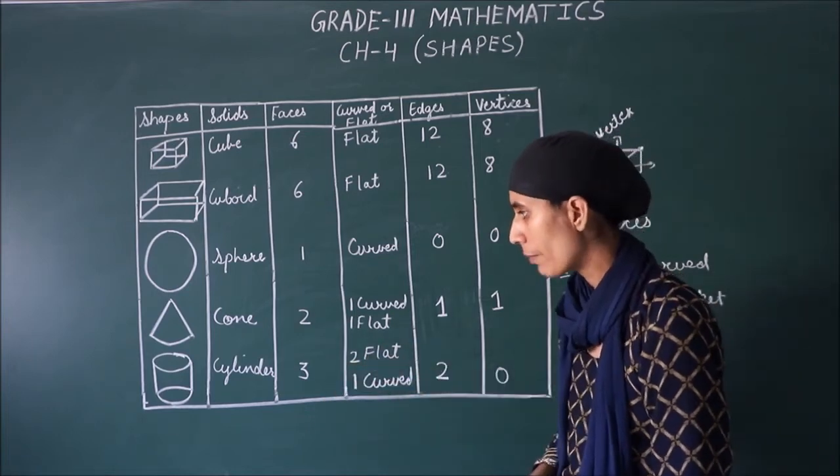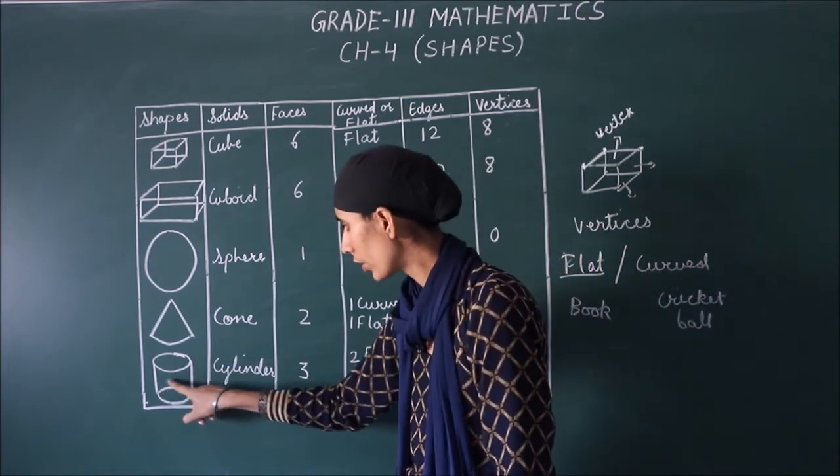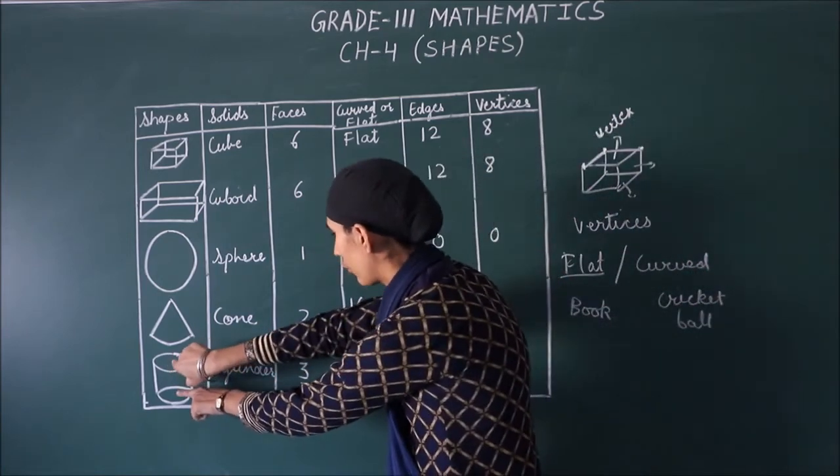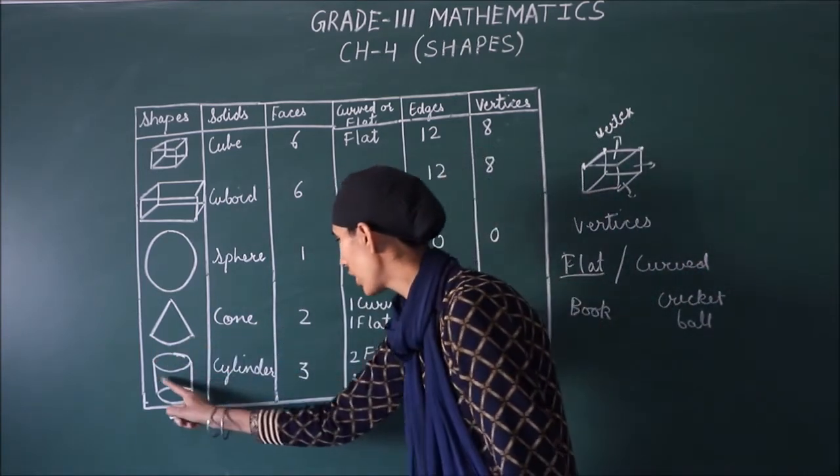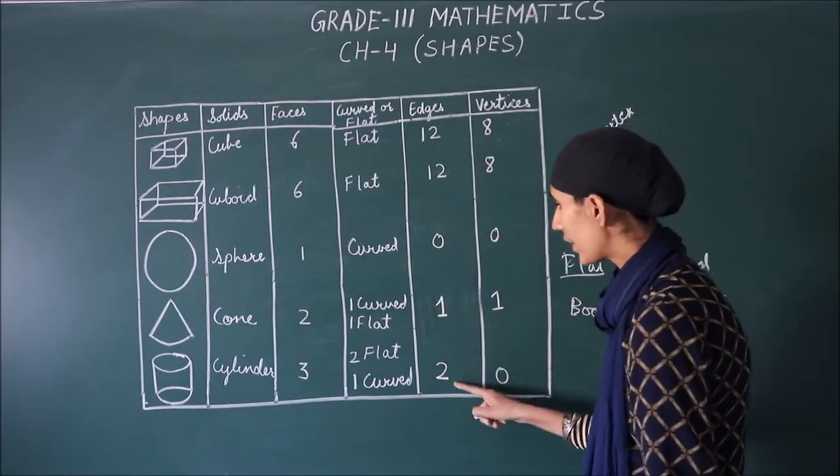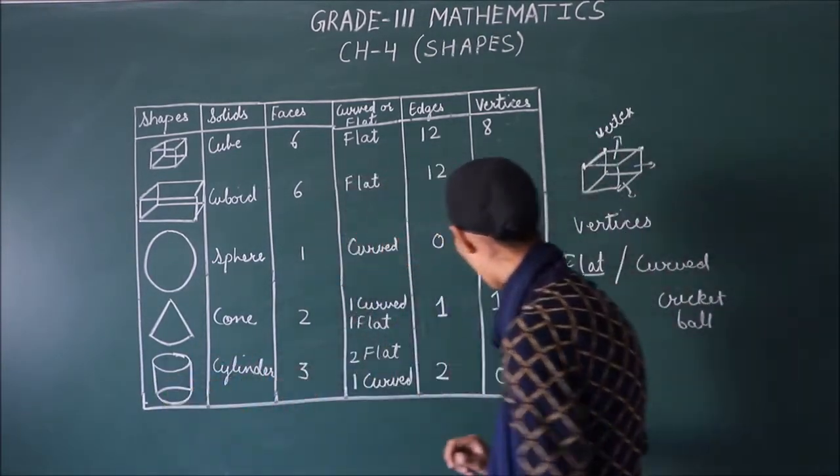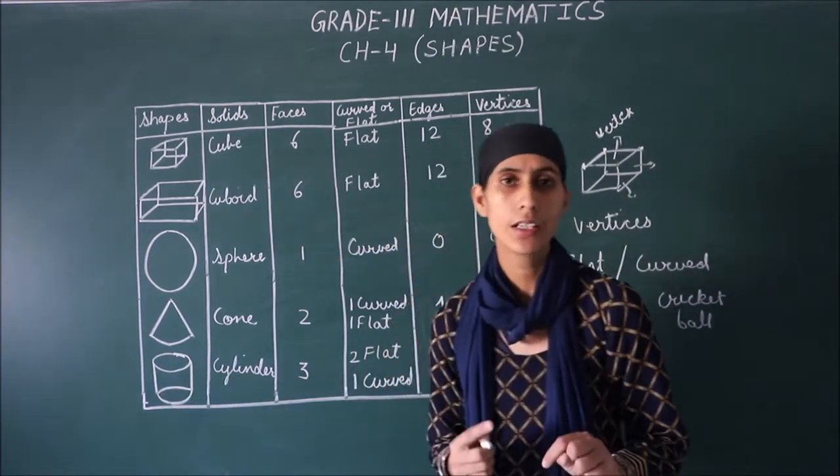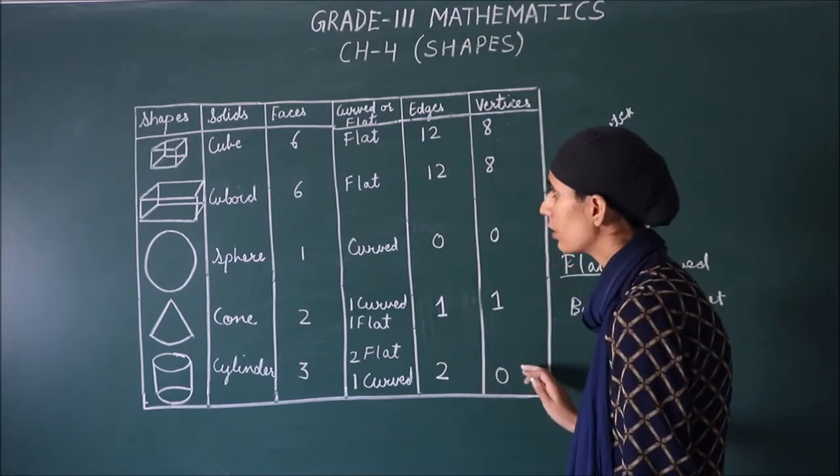Next, cylinder. We have three faces. One, two, and this. Two are flat. These are flat faces. One curved. And this is curved face. Next, edges. We have two. And vertices, we have no vertices. Because edges don't meet. So vertices don't happen.